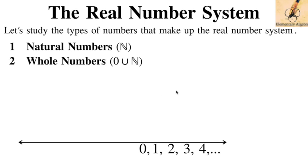Just as a disclaimer: there are some books that include zero in the natural numbers, but we will not do that here. Instead, the first list of positive numbers with zero will be called whole numbers. So zero is not part of the natural numbers in our book.